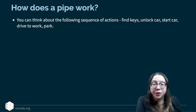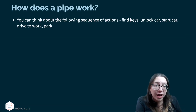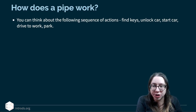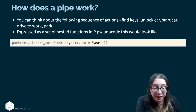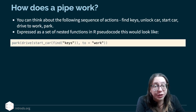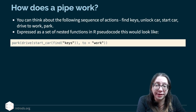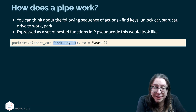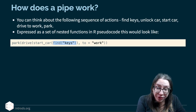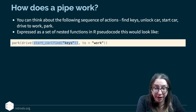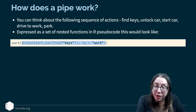How does a pipe work? Think about this sequence of actions: find keys, unlock car, start car, drive to work, park. Expressed as nested functions in R pseudocode, you'd write: park(drive(start(find_keys()))). With nesting, you start at the innermost parentheses and work your way out, which can be hard to read.